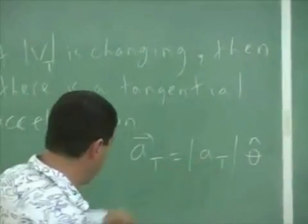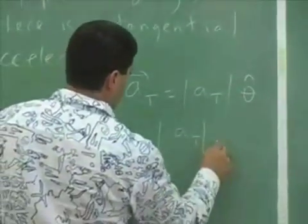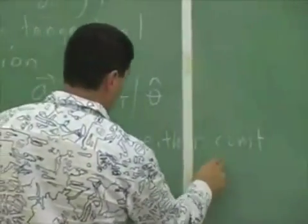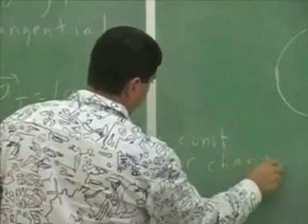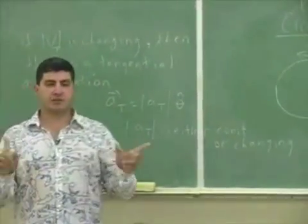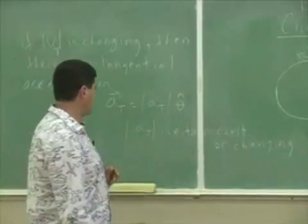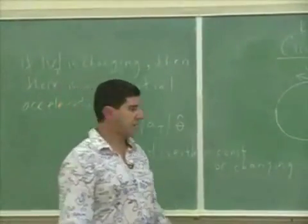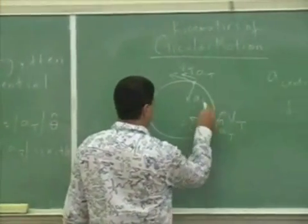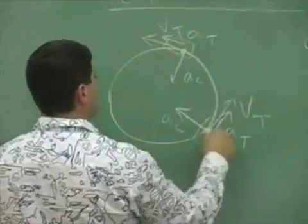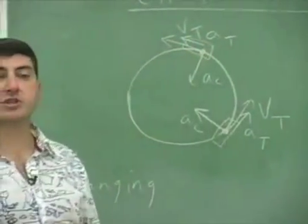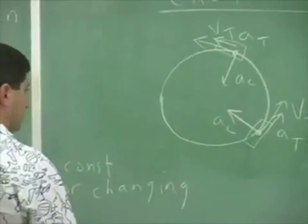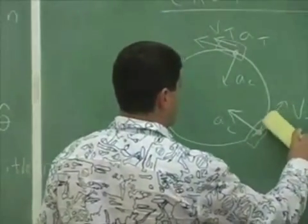The magnitude of a_tangential can either be constant or changing. I'll give examples for both cases. For instance, if the object is a car going around a circle and you apply the brakes — slowing down — what is the direction of a_tangential?